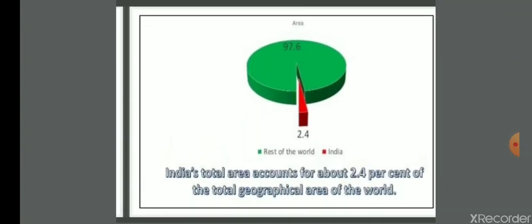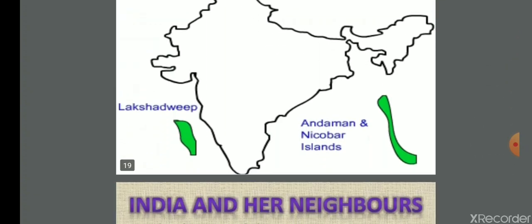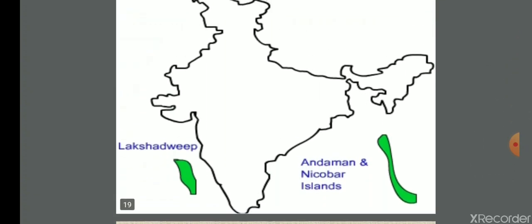India's total area accounts for 2.4% of the total geographical area of the world. India has two island groups: the Andaman and Nicobar Islands in the Bay of Bengal, and the Lakshadweep Islands in the Arabian Sea.